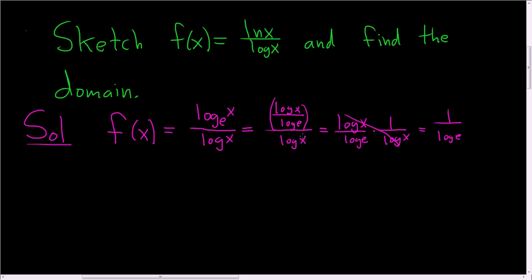So now let's go ahead and draw a preliminary sketch of the graph. So there's the x-axis and there's the y-axis. And we know that 1 over log e is a number, so this is a horizontal line.